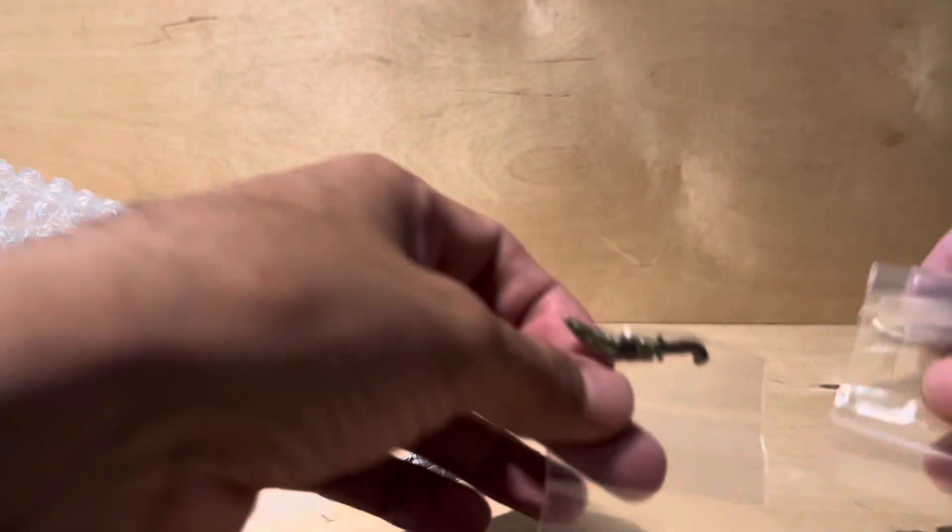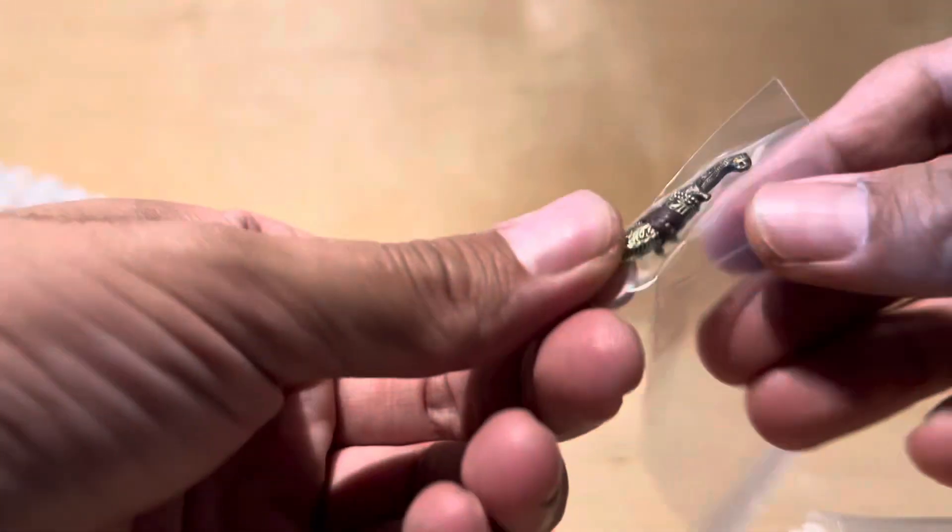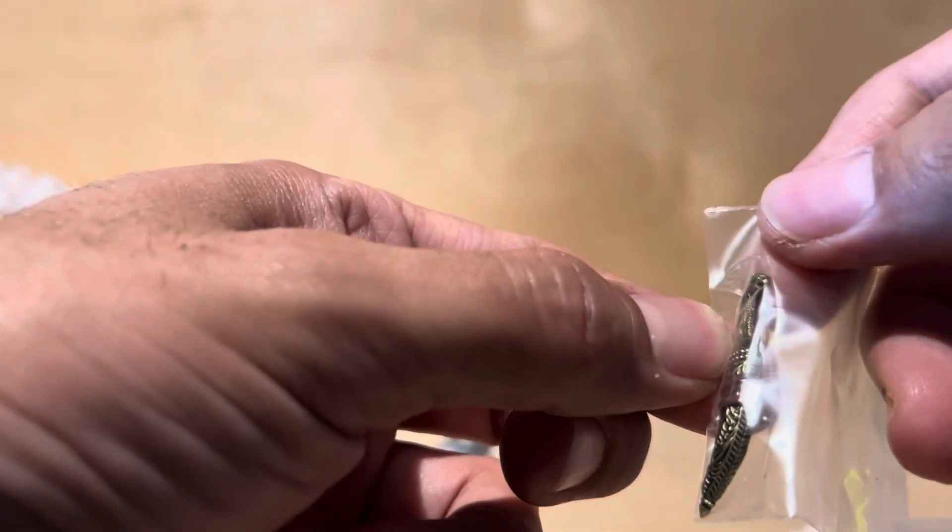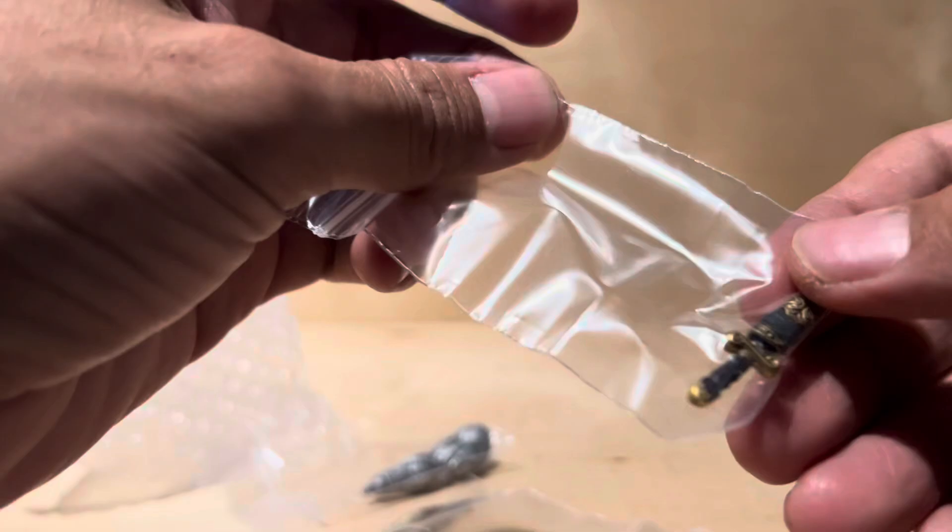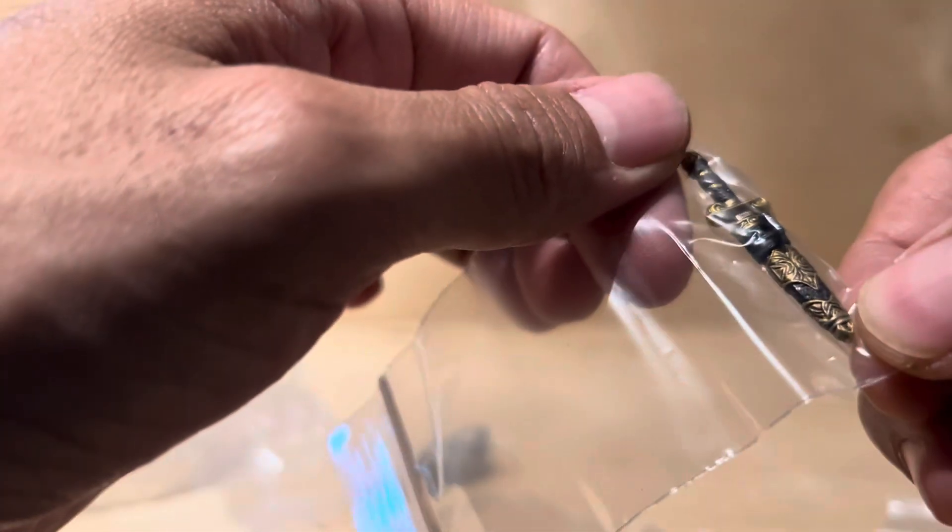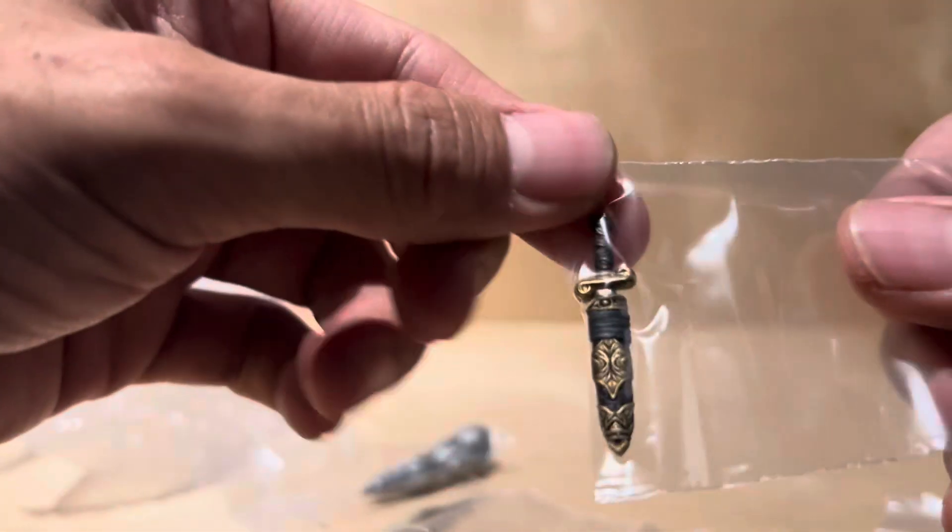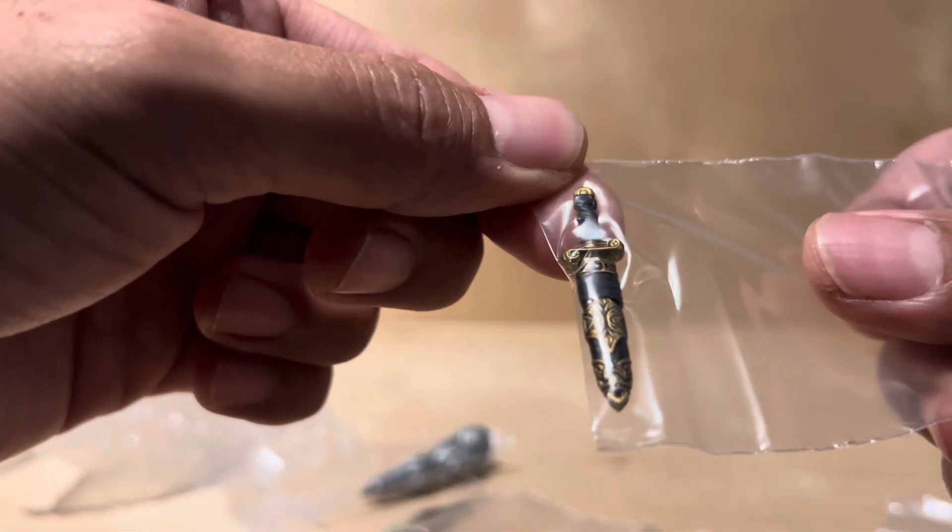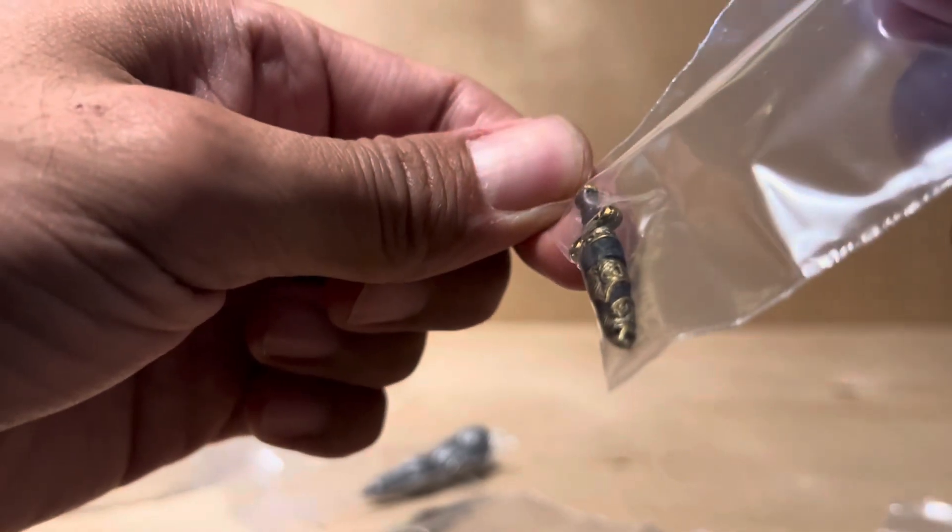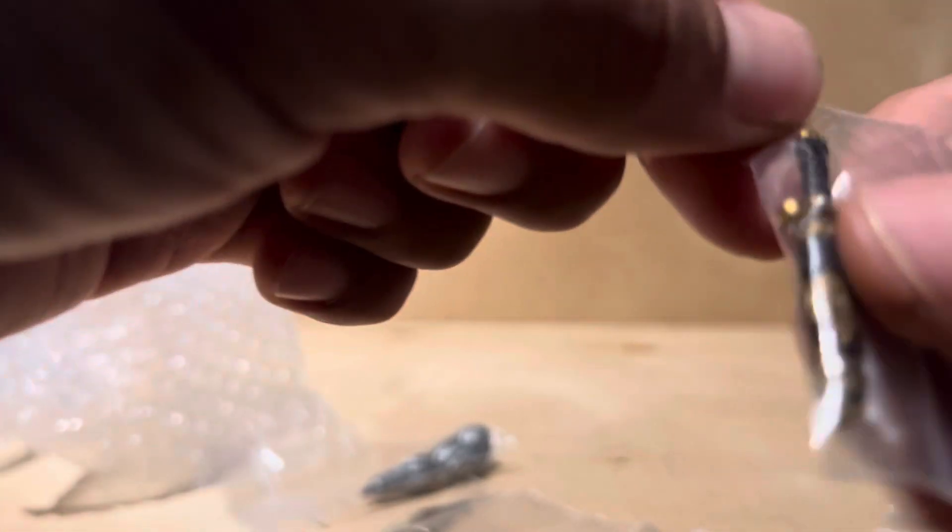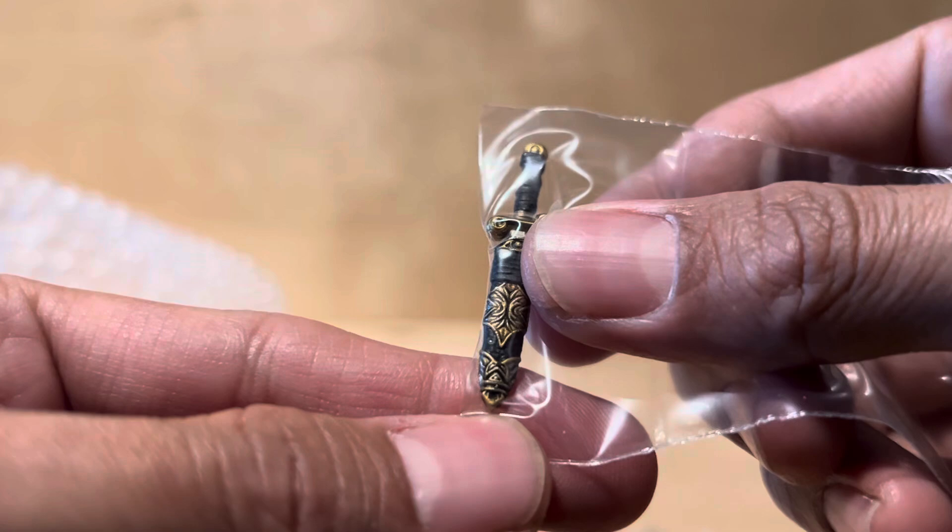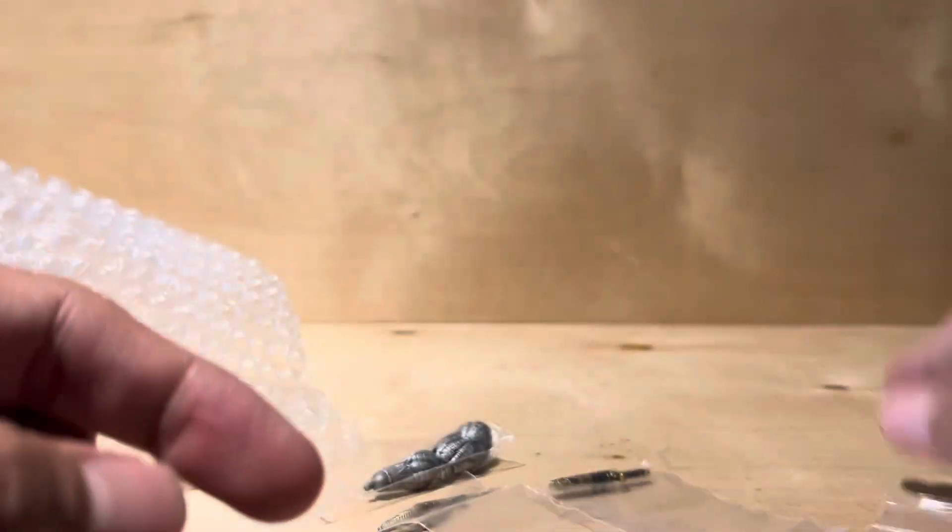We got this dagger, little jaguar and shit. Got this other dagger or knife. Nice. Looks like a little vampire face right there at the bottom.